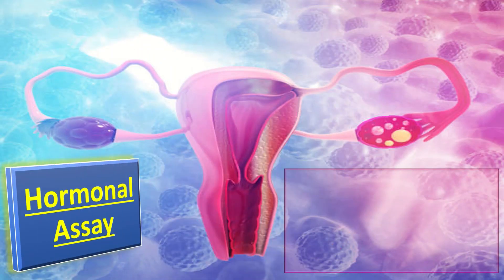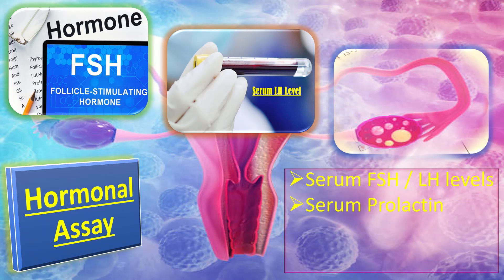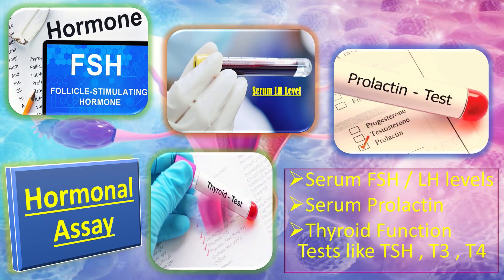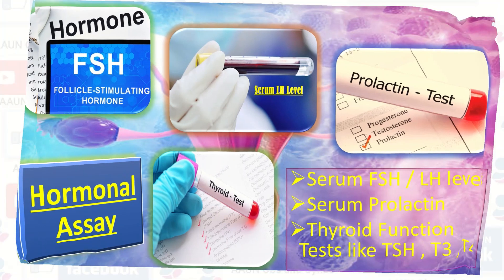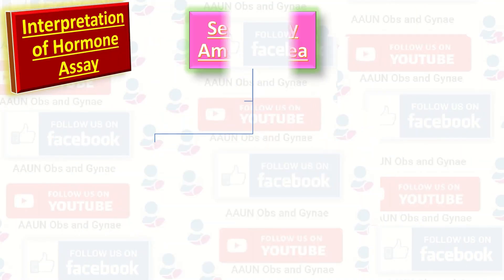Next come hormone assays. Serum FSH and LH levels, serum prolactin, and thyroid function tests like TSH, T3, and T4 levels are done in the hormone assays to diagnose different conditions. So let us discuss the interpretation of hormone assays.